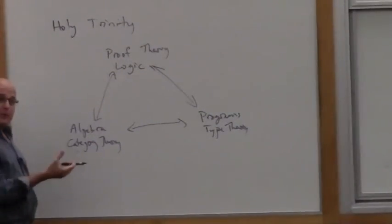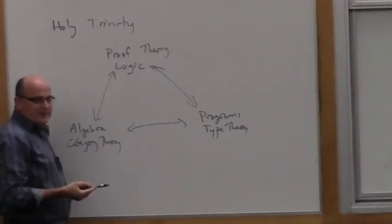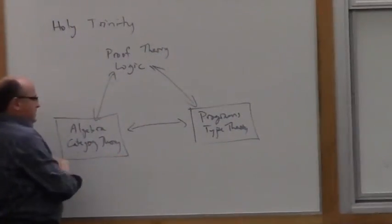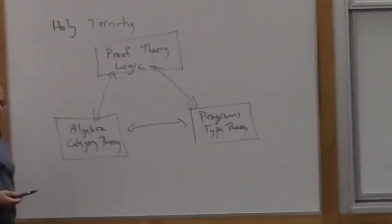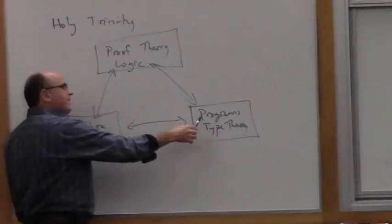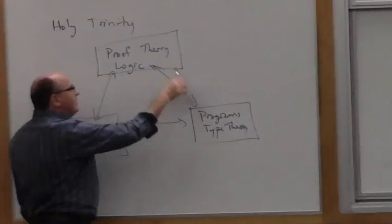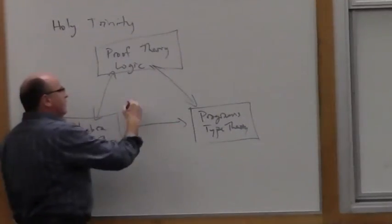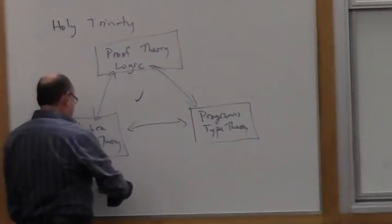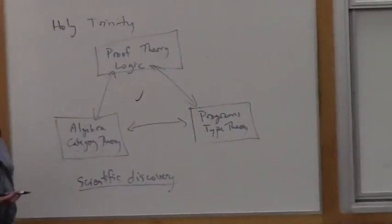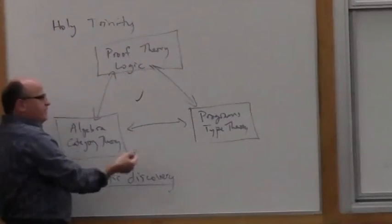The doctrine is the 'computing in three persons' principle: the idea that a computational concept may arise as a notion of computing, but the same concept may also arise in algebra and in logic. I would give that a more normative force and say you don't really know what you're talking about until you understand an idea all three ways — as a notion of computation, as a notion of proof, and as a notion of algebraic structure. If you find something that has good meaning in all three senses, you have what I would call a proper scientific discovery — something permanent.